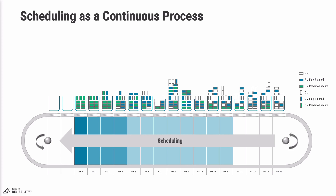Looking at the current frozen week, you'll see that there are only green blocks in that bucket — only ready-to-execute work — and the bucket is neatly filled to the top, meaning we are utilizing our available labor capacity. In the following draft weeks — the next three weeks — next week is neatly filled and mostly green, with just one blue block, meaning it's fully planned but the planner has not yet confirmed that materials are available and therefore hasn't marked that work order as ready to execute.